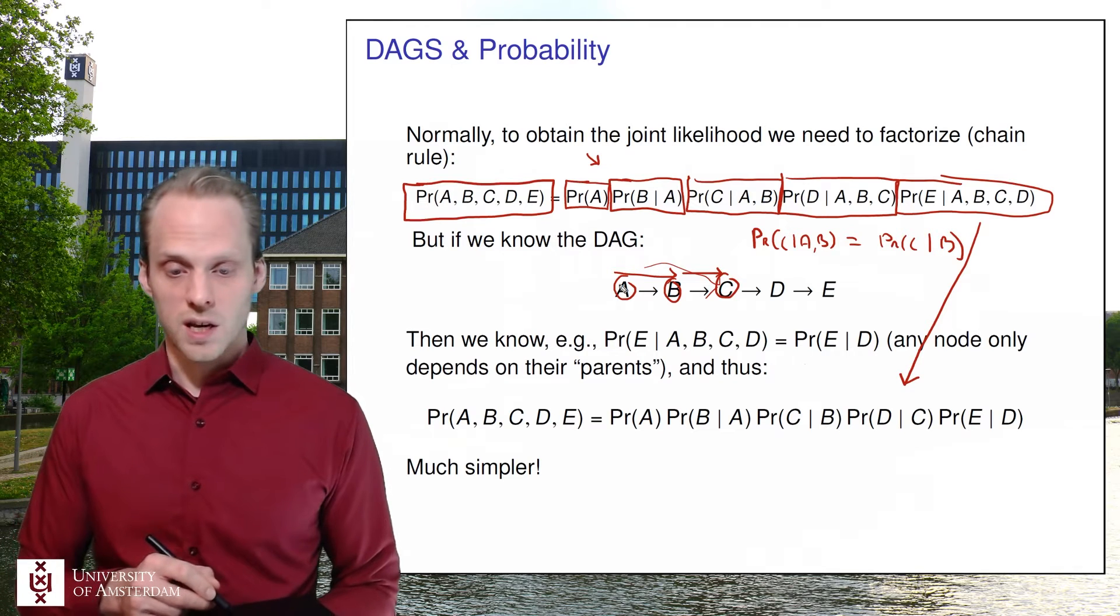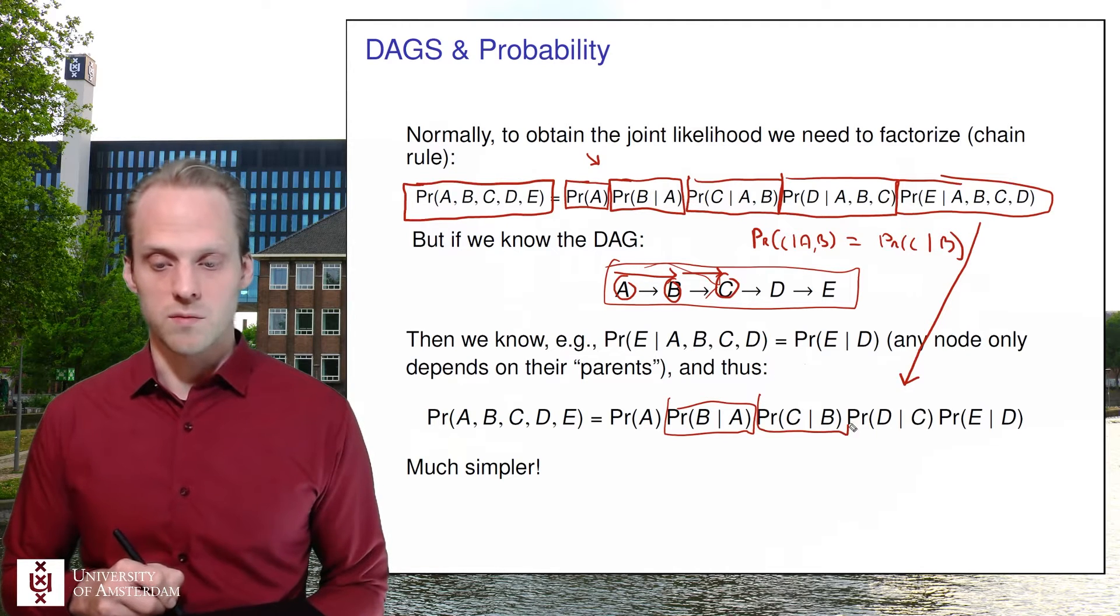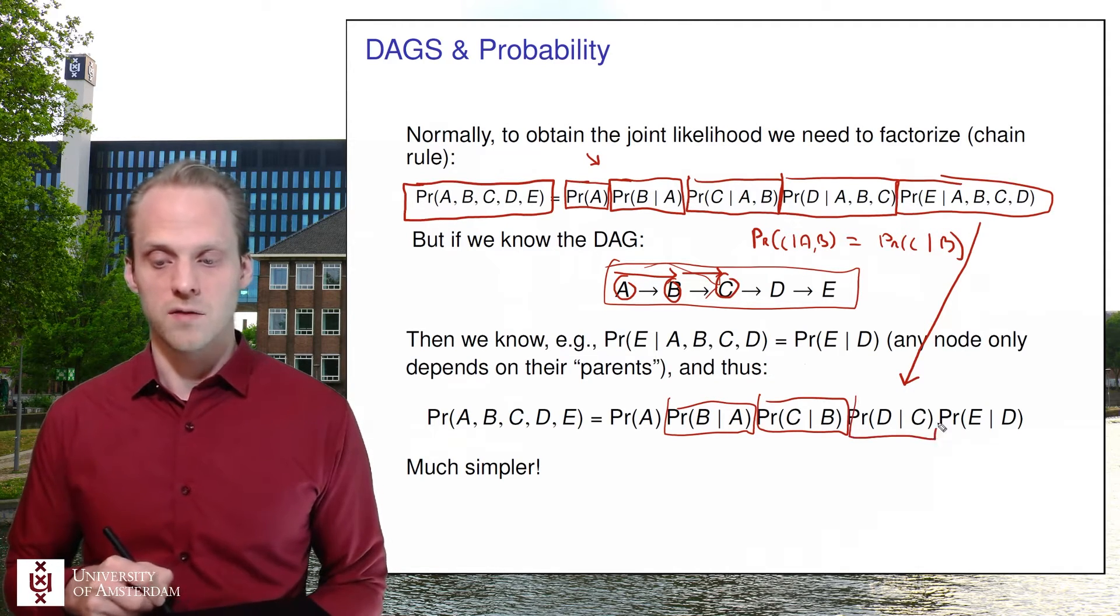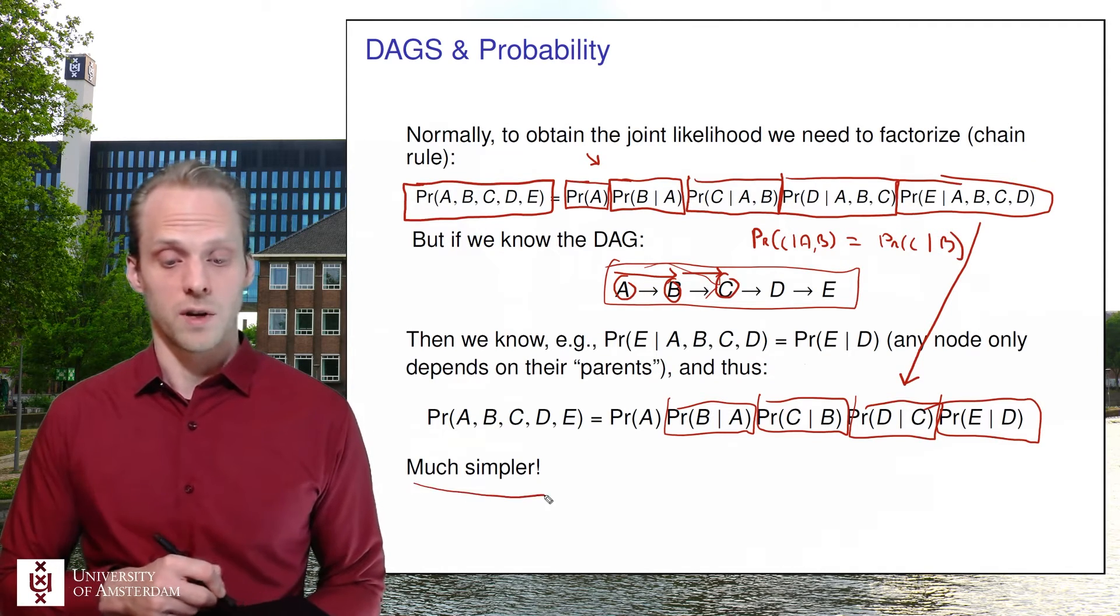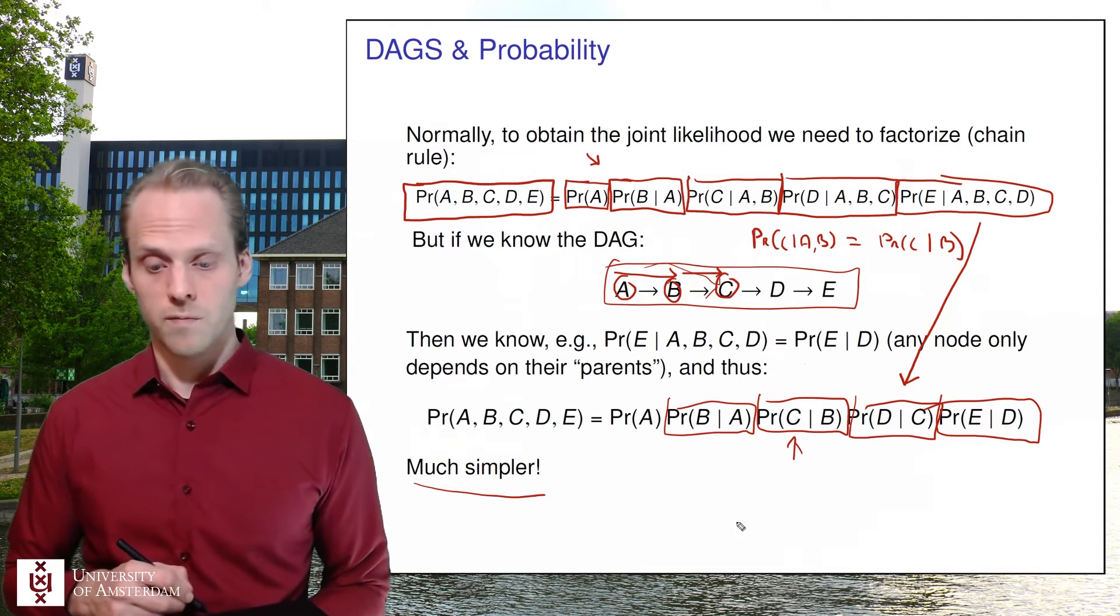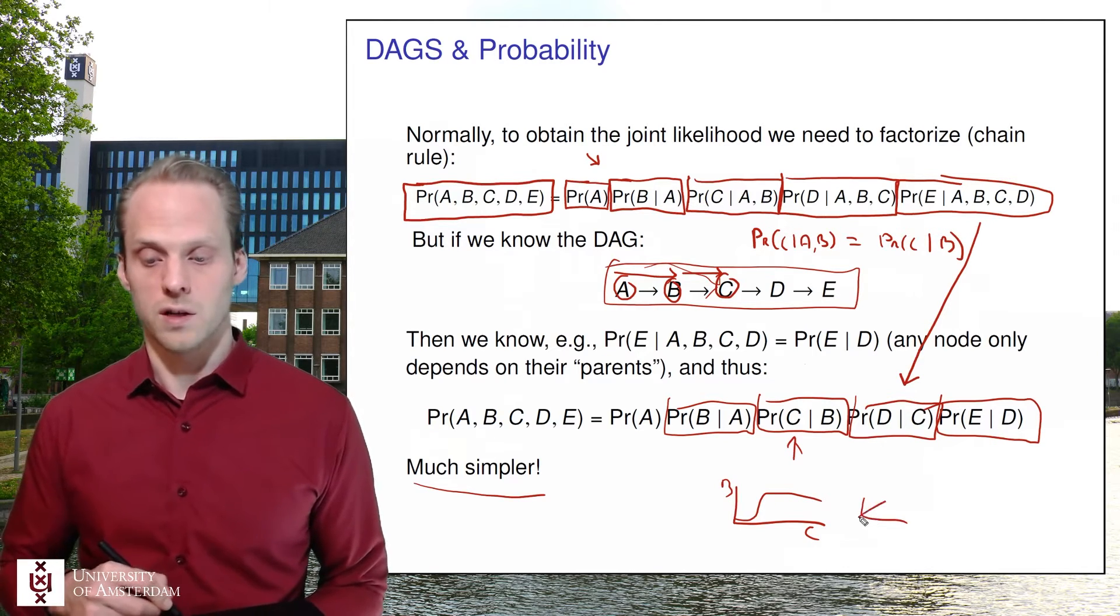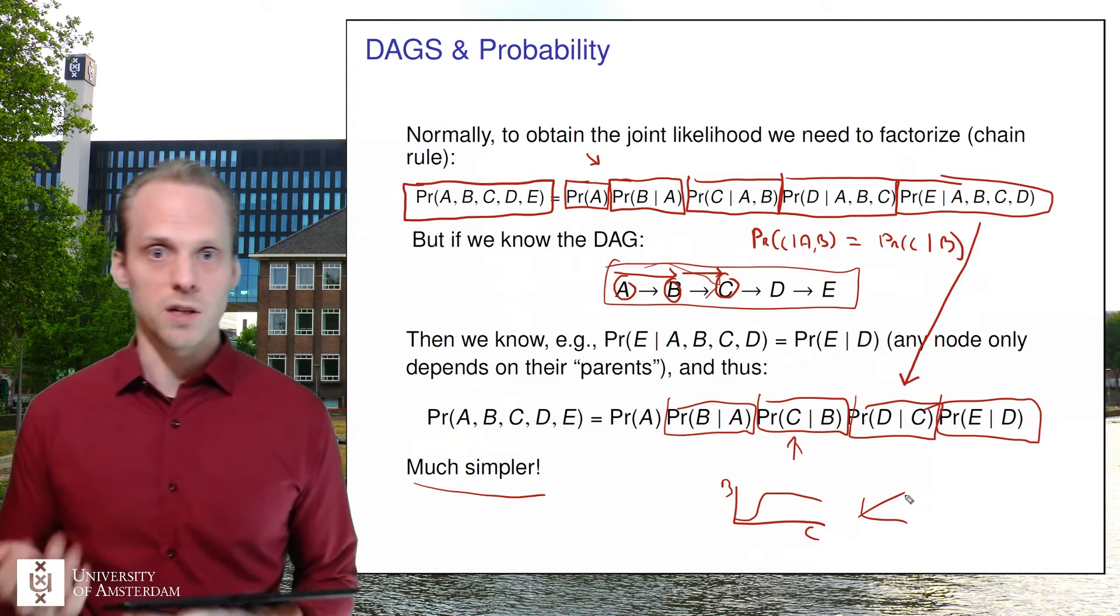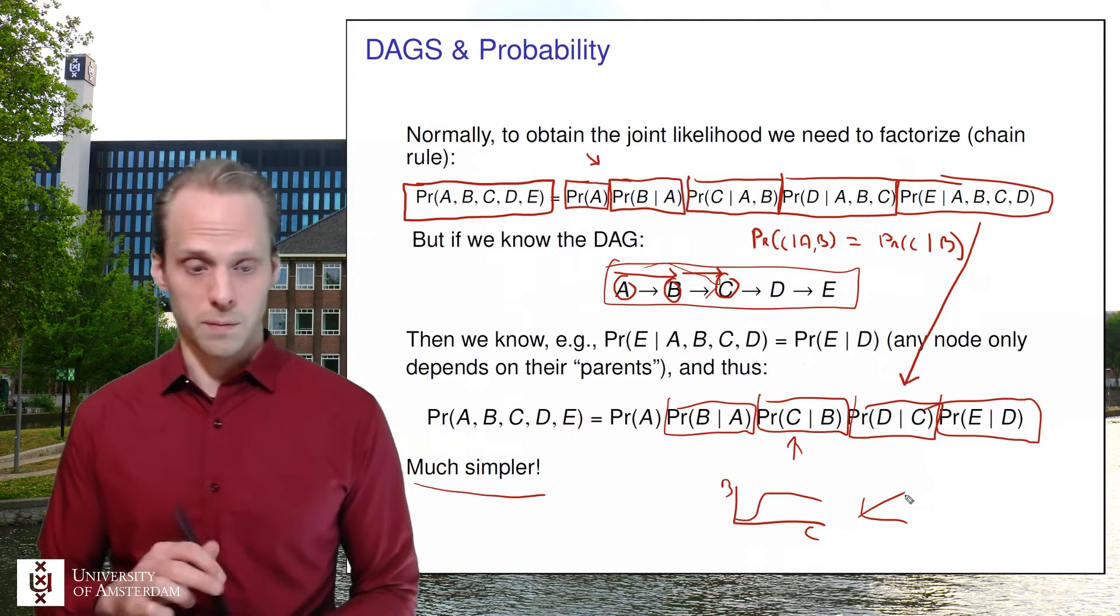And that makes this expression much simpler because then we can write this expression by simply multiplying the probability of one variable given its parents, as we can call it, or its causes. So in this case here we can say okay we only need B given A and C given B and D given C and E given D. That's much simpler, right? Because this can be a very simple function, it only has two variables in there. And we could for example specify okay this is like a logistic function of let's say C on B or like a linear function or anything. We don't need more than two variables there. So that's much much simpler. That's a very powerful thing.